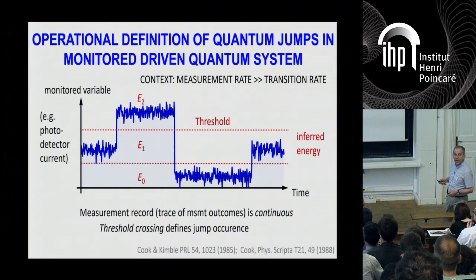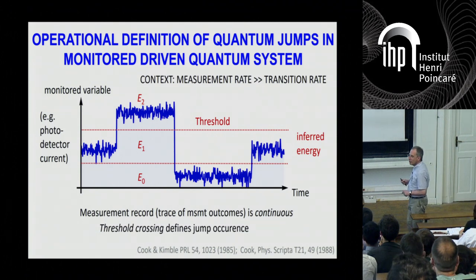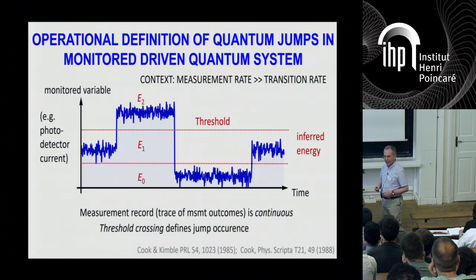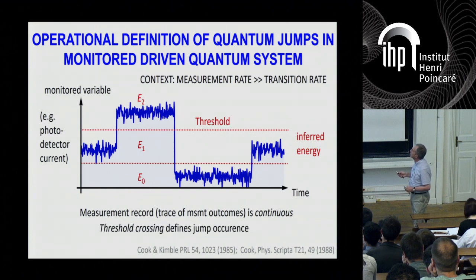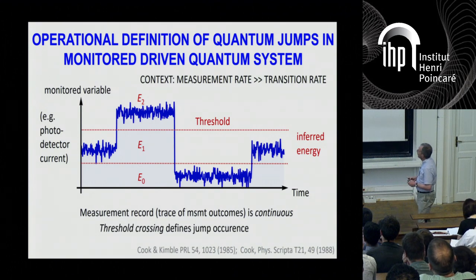And then you will declare that a jump has happened when you cross this threshold. So this is an important notion because the jump, in a way, is defined by the operator, by the observer. The signal is, of course, the raw signal coming from the experiment is always continuous.